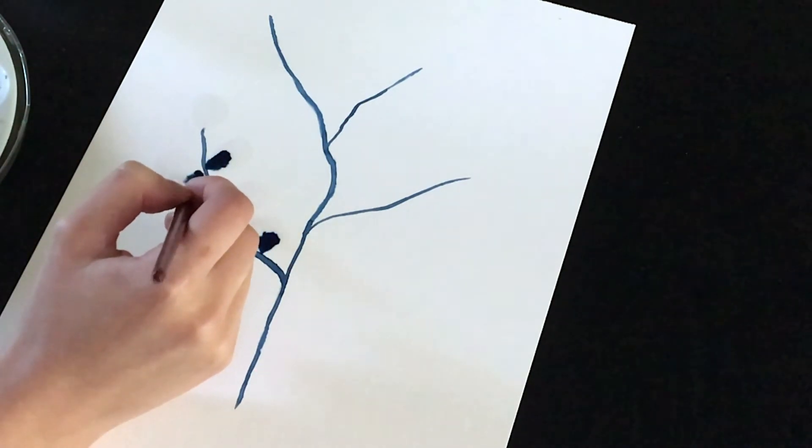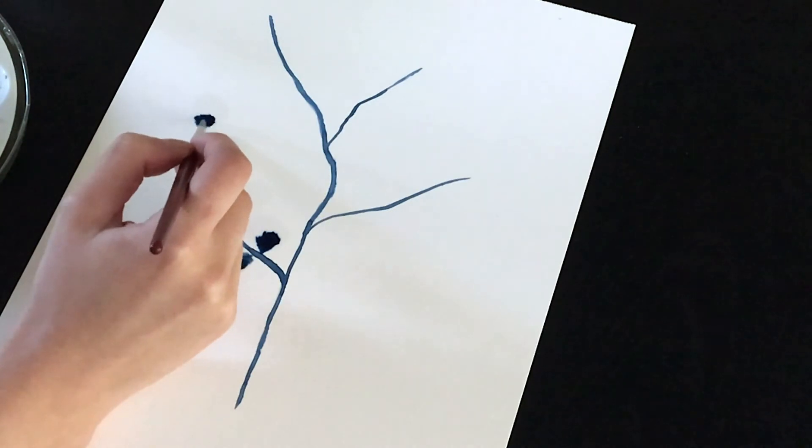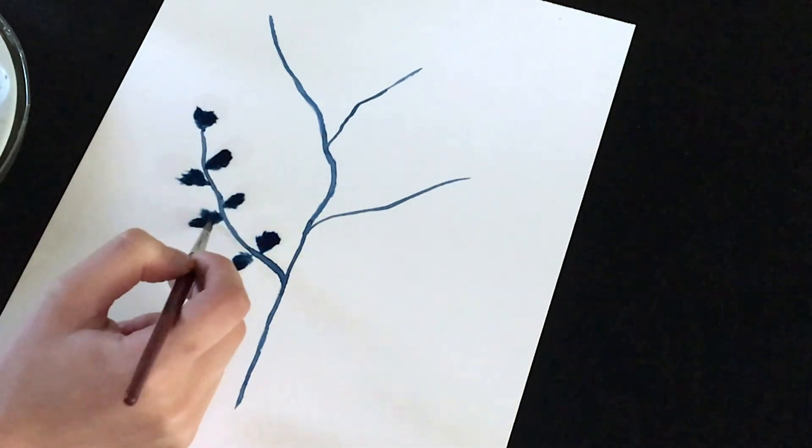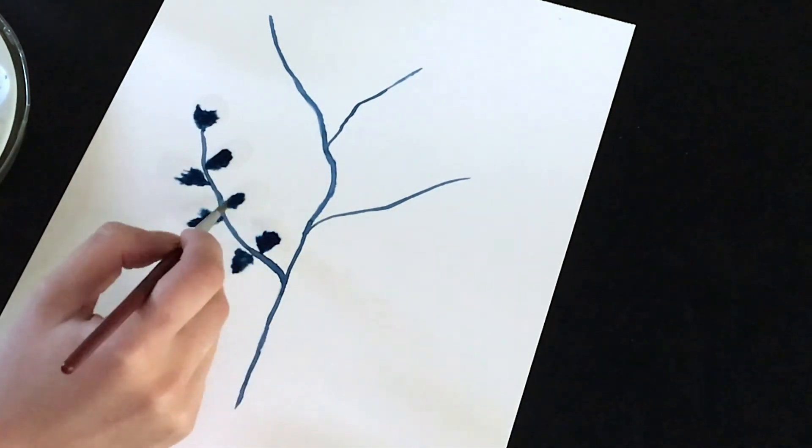Continue dropping the paint on each leaf, always doing it at the stem. Each leaf will turn out differently because the water will carry the paint however it wants. You can't control this part, which I think makes it all the more fun.